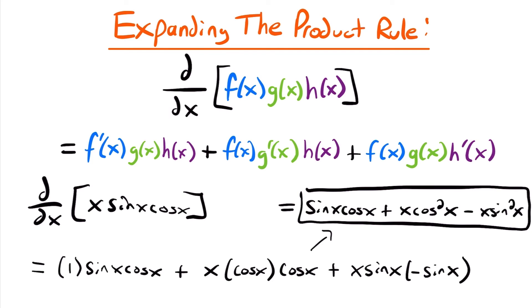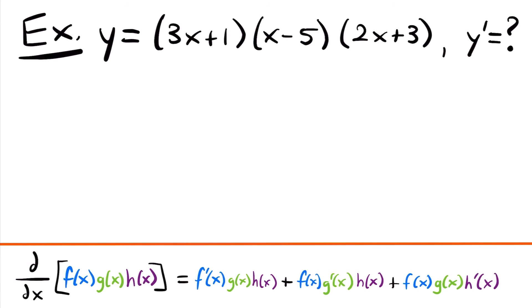The product rule can be expanded to three functions, and even four or five, though you won't typically see those. Let's do one more example with three functions. We have y equals (3x plus 1) times (x minus 5) times (2x plus 3), and we want y prime. Our three functions are: f of x is 3x plus 1, g of x is x minus 5, and h of x is 2x plus 3.